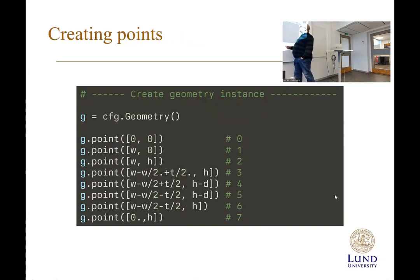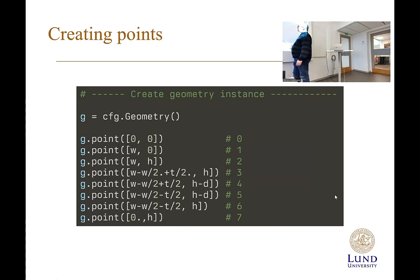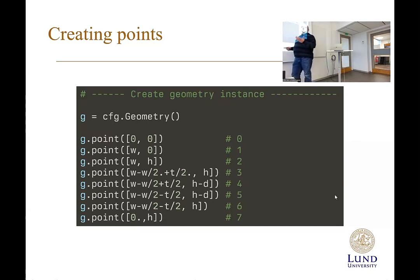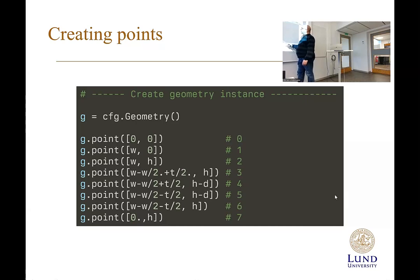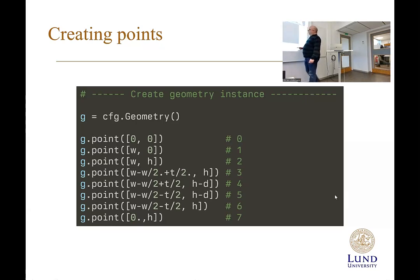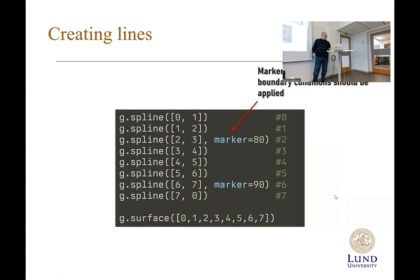The first thing we do is create an instance of the geometry object from cfg.geometry. Now we have an empty geometry container. We define it by adding points: point 0 at (0,0), then additional points using the width W and other model parameters. After adding all eight points, we then create our lines.